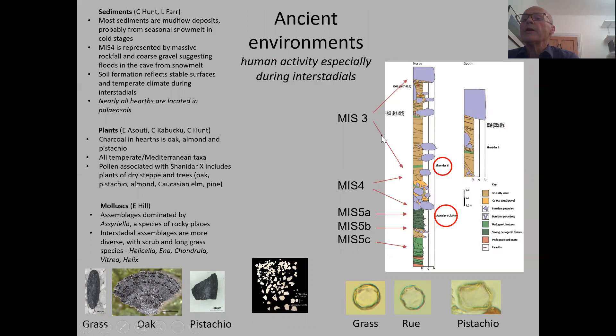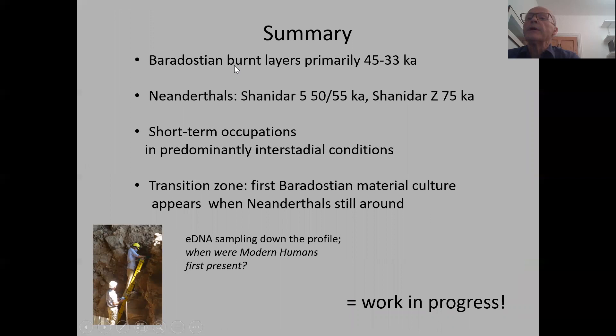For environmental evidence, we have a schematic of the sections. We can recognize within MIS 3, 4, 5A, B, and C deposits. This is the location of the upper Neanderthals — Shanidar 1 and 5 — while Shanidar 4 and our new find, so-called Shanidar Z, are at a lower level. Taking the sediments, the plants, and the mollusks together, they all combine to indicate that human activity is especially occurring during interstadial conditions.